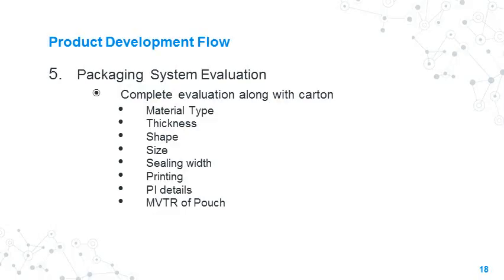The next step is packaging system evaluation. Transdermal patches are usually packed in individually sealed barrier pouches made from multi-laminated films. The complete evaluation of packaging material along with cartons is carried out by the packaging team. The material type, thickness, shape, size, sealing width, printing, patient information leaflet, and moisture vapor transmission rate of the pouch are determined, and the data is provided to R&D. The packaging team and R&D then identify a suitable packaging system.